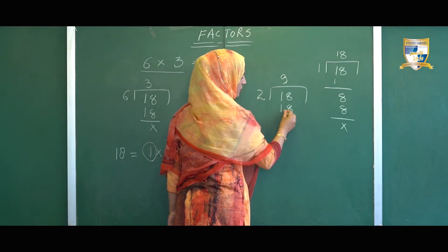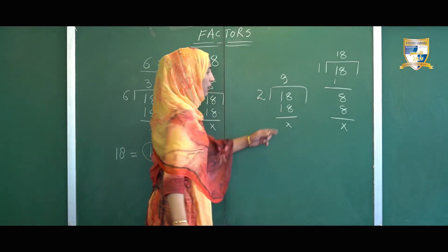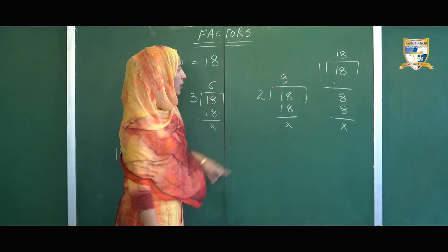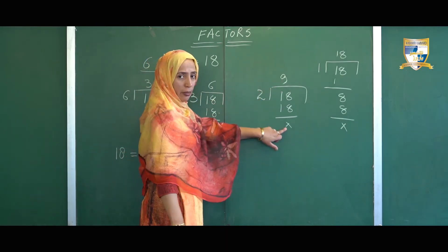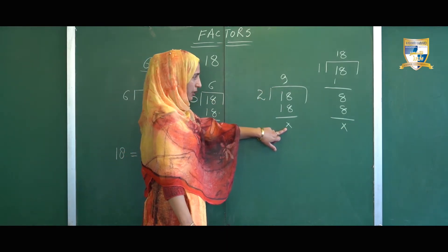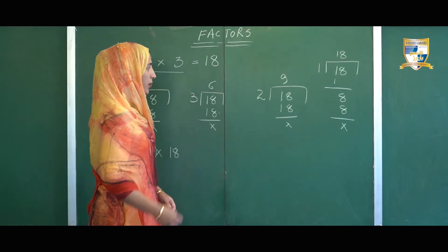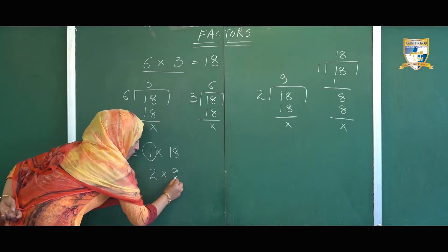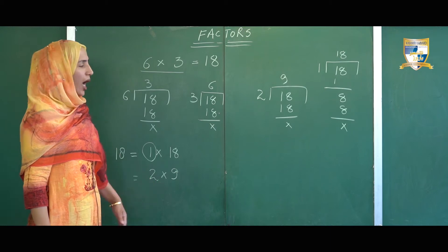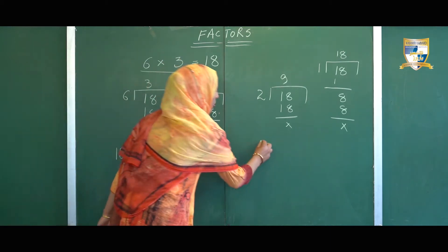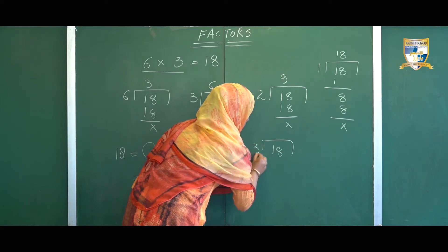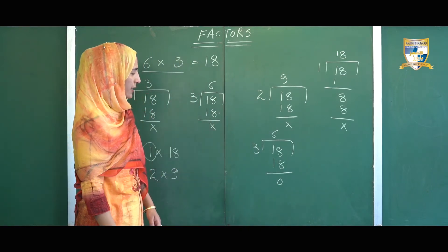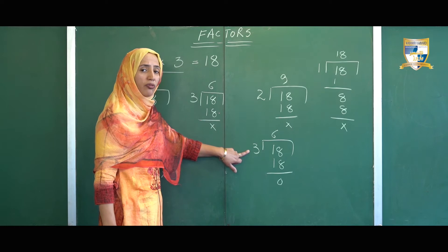Two 9s are 18. Here you could see 18 is exactly divisible by 2. The quotient is 9 and the remainder is 0. So 18 is exactly divisible by number 2. The next possible combination for number 18 is 2 × 9, because 18 is exactly divisible by 2. After 2, we'll move on to number 3: three 6s are 18. Here you can see 18 is exactly divisible by 3 also, so 3 is also a factor of number 18.